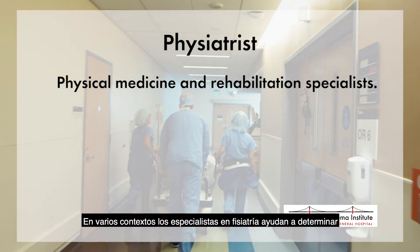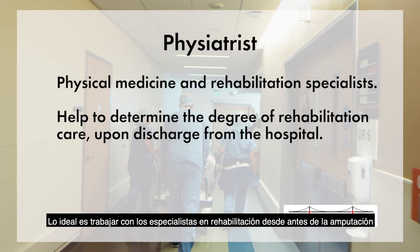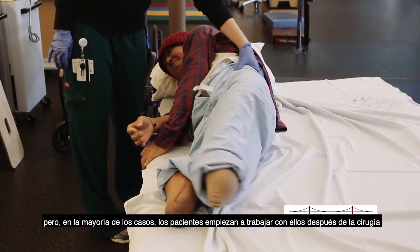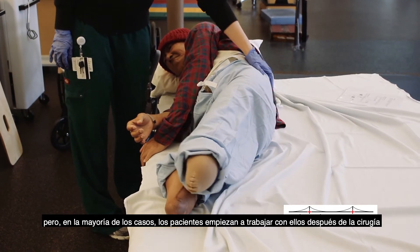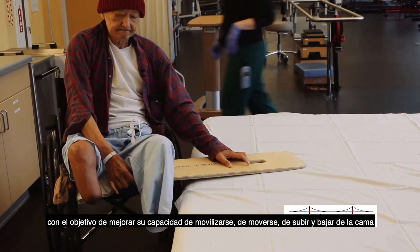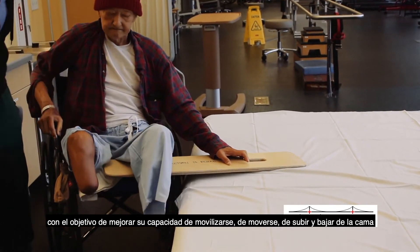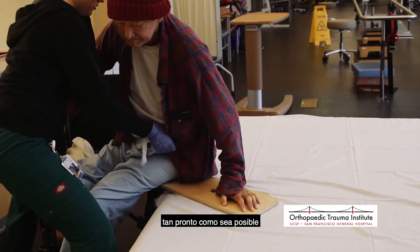In many settings, the physiatrist helps to determine the degree of rehabilitation care that you may need upon discharge from the hospital. Ideally, working with rehabilitation specialists should begin prior to amputation, but in many cases, you will begin work with these specialists shortly after surgery with the goal of improving your ability to mobilize or move around and in and out of bed as soon as possible.